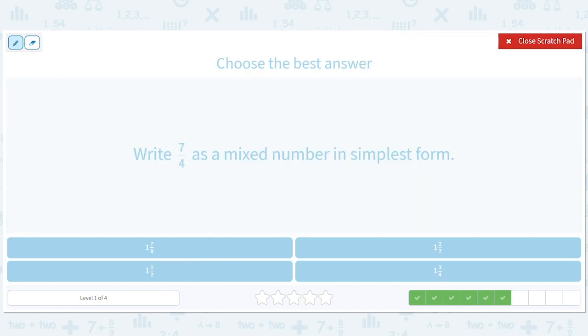Okay. Well, how about this? 7 fourths. 7 divided by 4. 1. There's a remainder of 3. So, it should be 1 and 3 divided by 4.